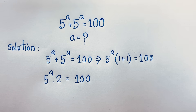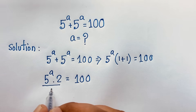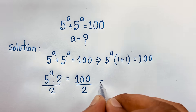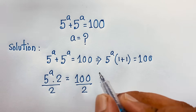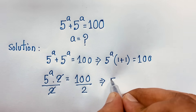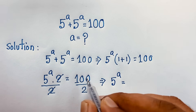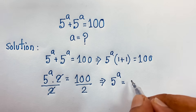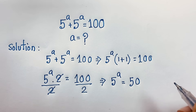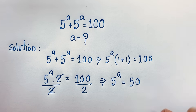1 plus 1 will be 2. Now at this moment I divide both sides by 2. Then you can see this 2 and this 2 cancel out. We will find out 5 to the power A is equal to 100 divided by 2. So we will find out 5 to the power A is equal to 50.